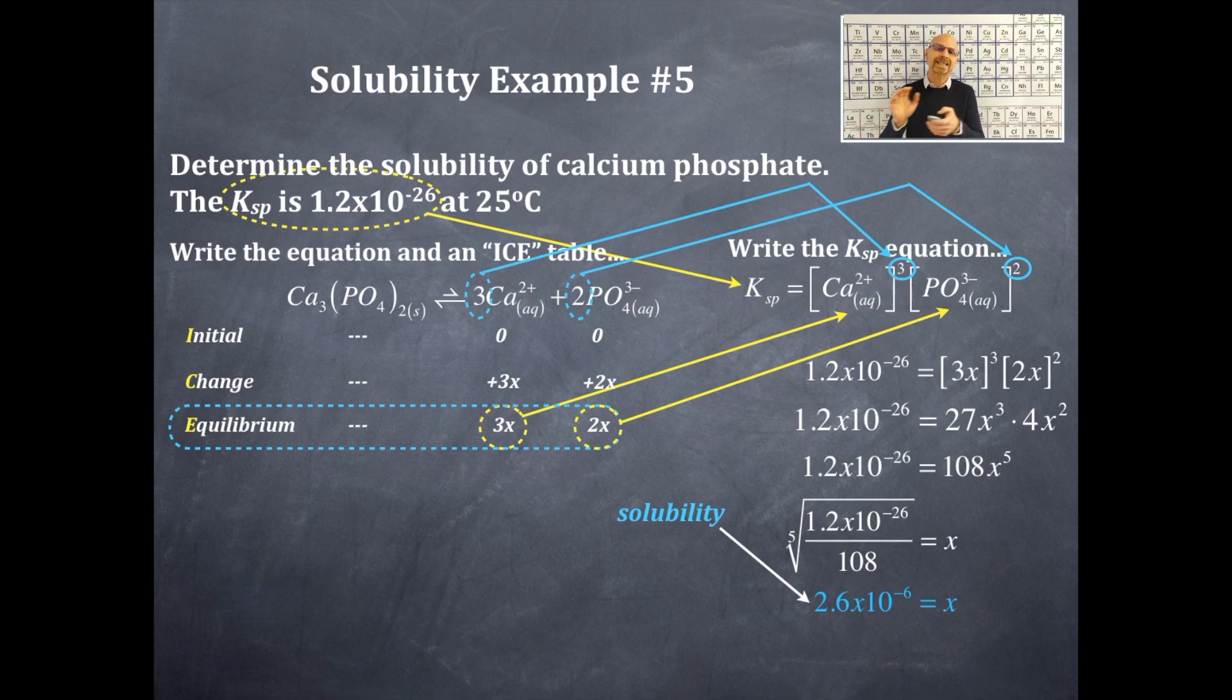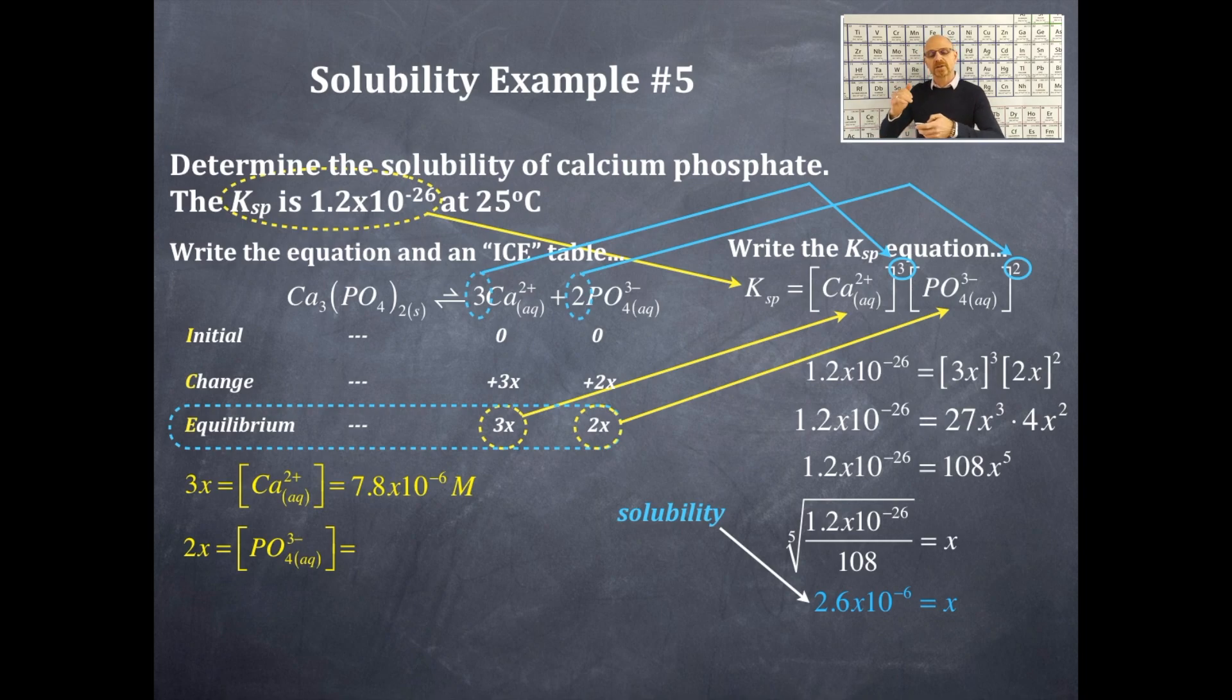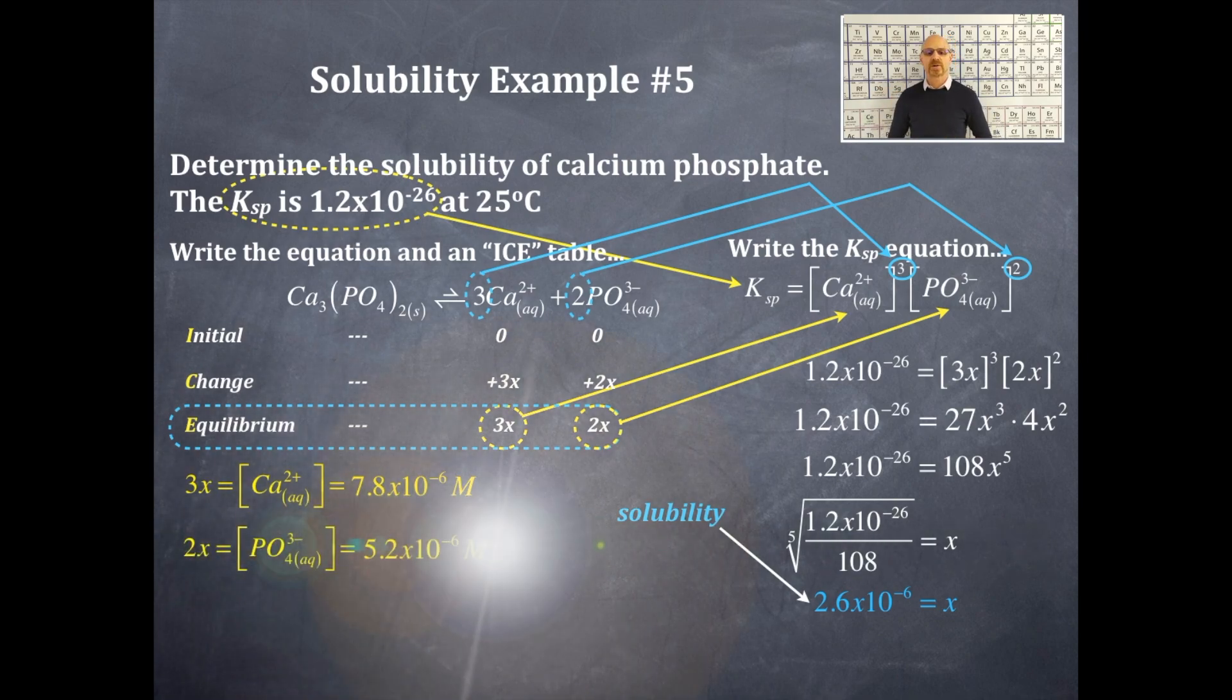I'm substituting back into my equilibrium ICE table at the equilibrium area and for the calcium it's a 3x. So I'm going to take my 2.6 times 10 to the negative 6, multiply that by 3 and I'm going to get this value right here, 7.8 times 10 to the negative 6 molar. To get the phosphate ion concentration it's 2 times x. So 2 times 2.6 times 10 to the negative 6. Plug that in and I'm going to get 5.2 times 10 to the negative 6 molar.